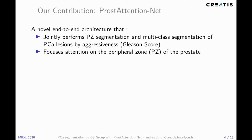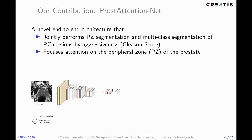In this work, we propose a novel end-to-end deep architecture called Prostate Attention Net. It automatically performs segmentation of the prostate peripheral zone and uses this zonal prior as an attention gate for the detection and grading of lesions of the peripheral zone. The encoder first encodes information from multi-channel T2-weighted and IDC input images into a latent space.